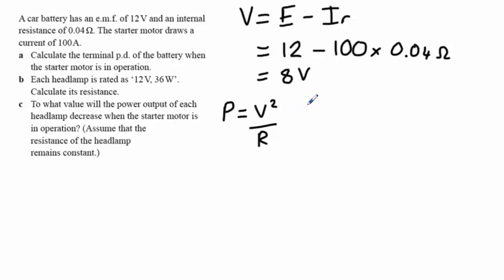And we can rearrange that to get R equals V squared divided by P. So 12 squared divided by 36 gives us a resistance of 4 ohms for our headlamps.